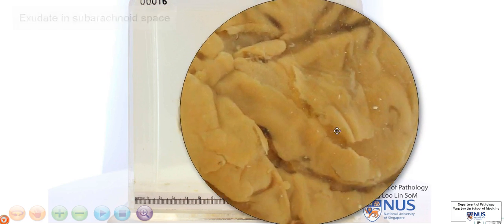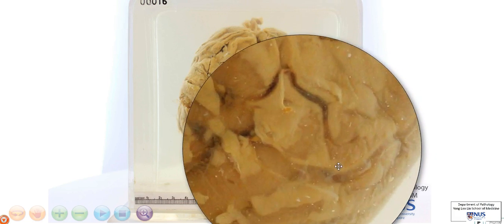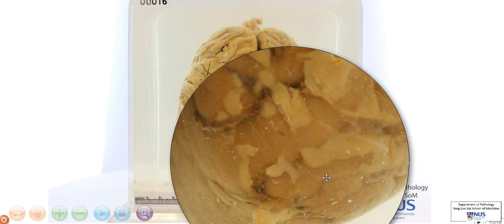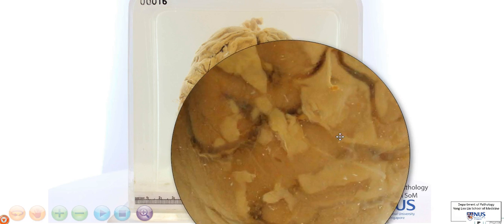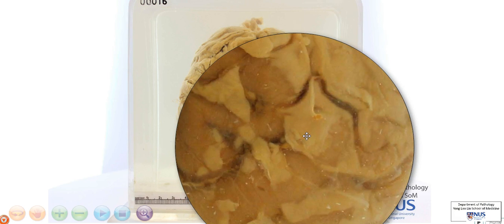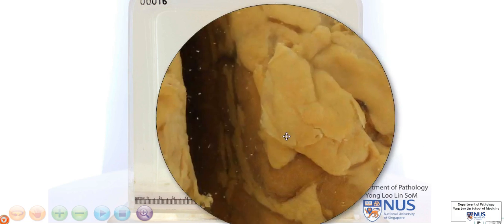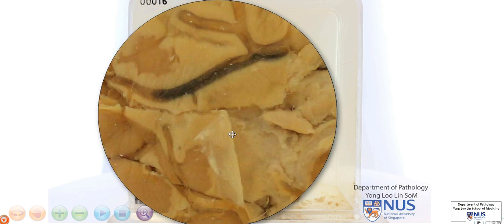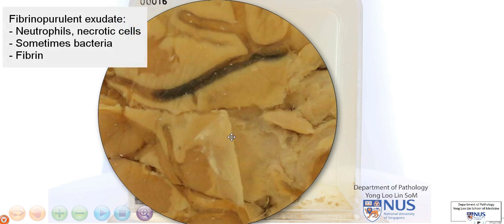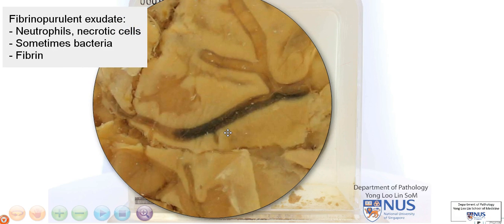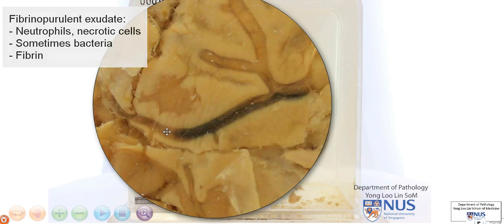It's also present in the right cerebral hemisphere, and we can see some areas where there is no exudate visible, but we can actually see the surface of the brain, the cortex, and other areas where there is exudate. This exudate is composed of lots and lots of neutrophils, as well as perhaps some bacteria and some dead cells. And this is a fibrinopurulent exudate. Sometimes there is fibrin as well.